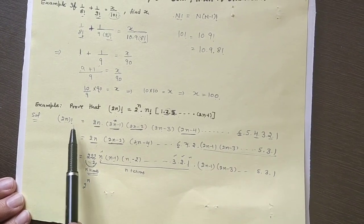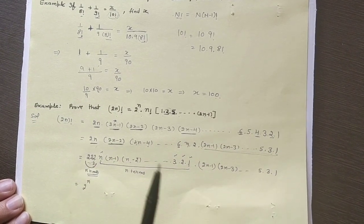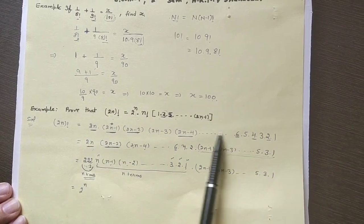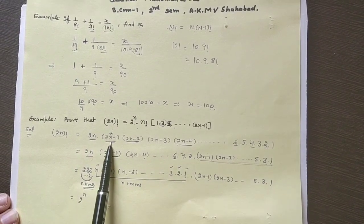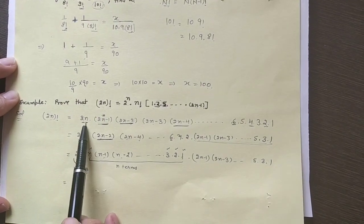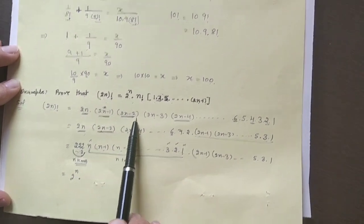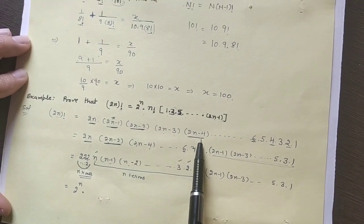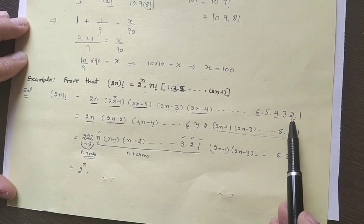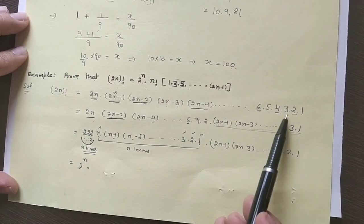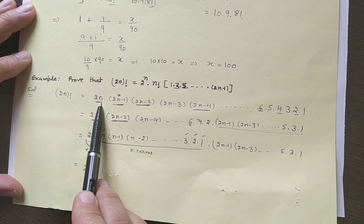Applying the definition of factorial, (2n)! is the continued product: 2n into (2n minus 1) into (2n minus 2) into (2n minus 3) into (2n minus 4), and so on down to 6, 5, 4, 3, 2, and 1. This is the continued product of 2n natural numbers.